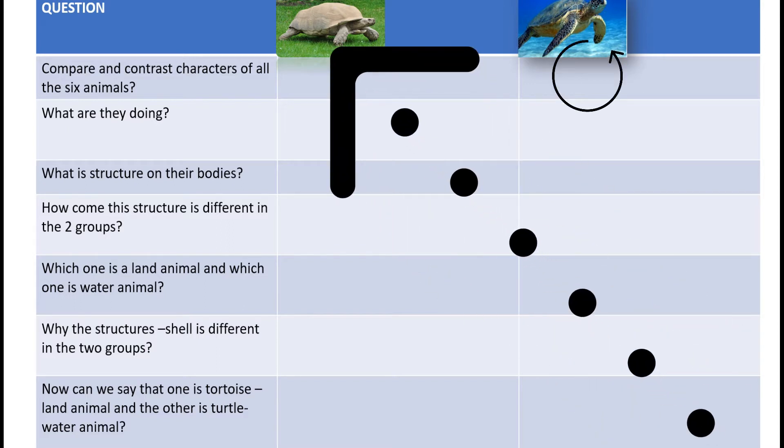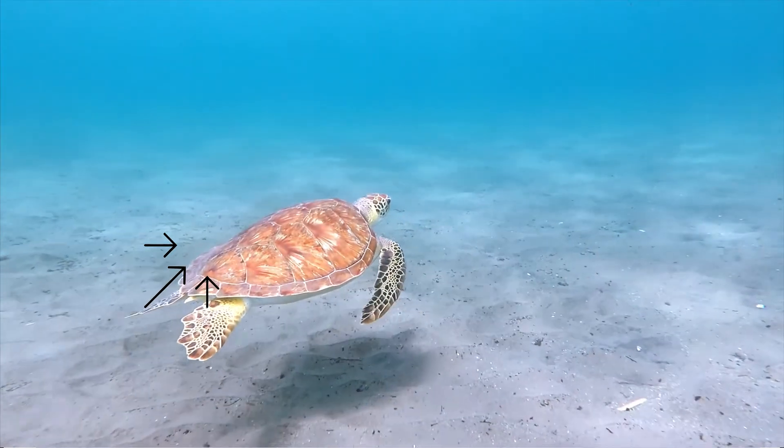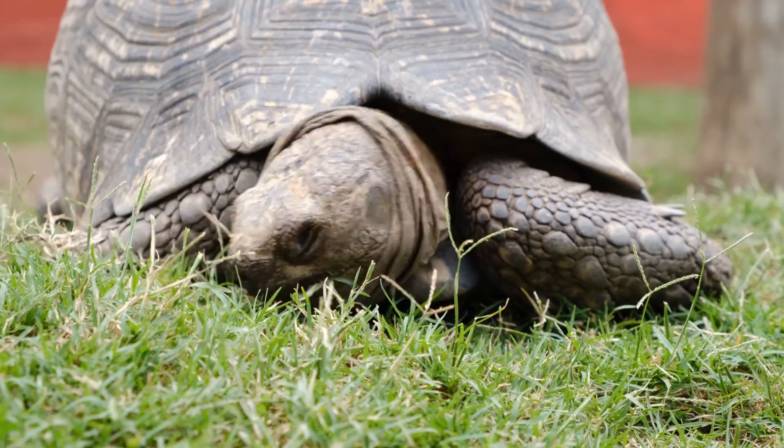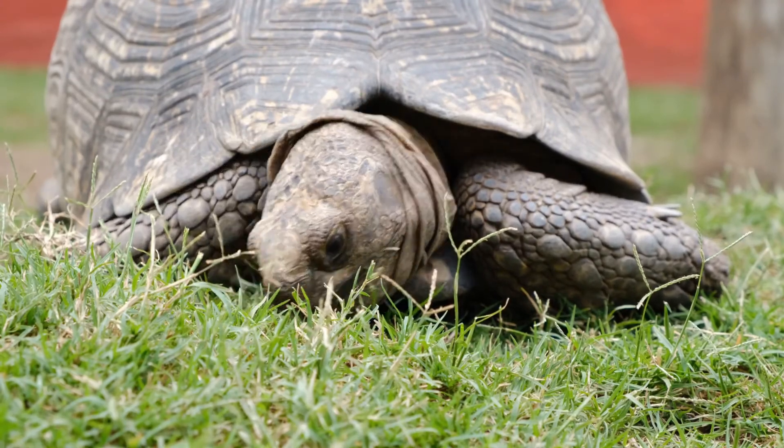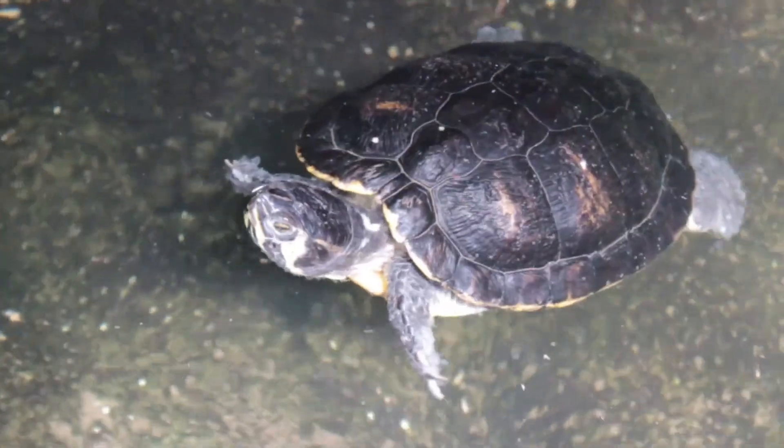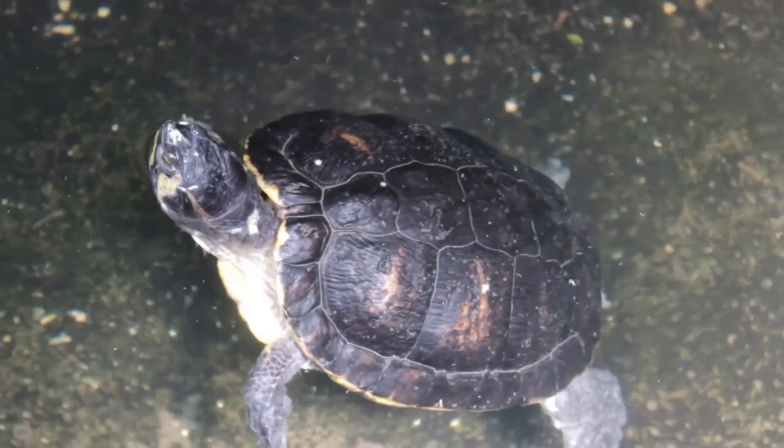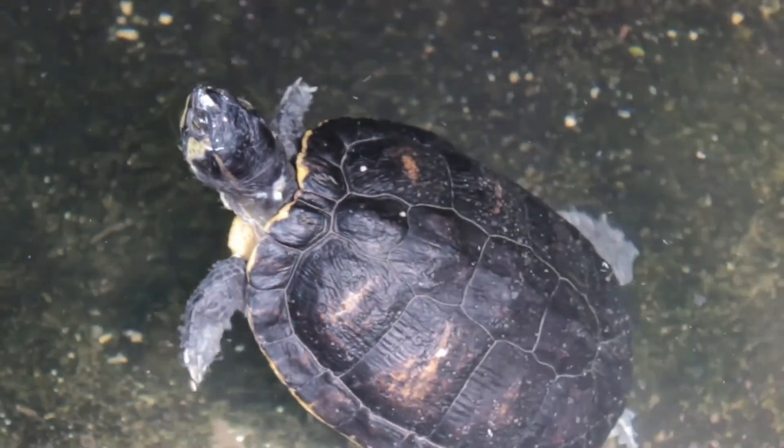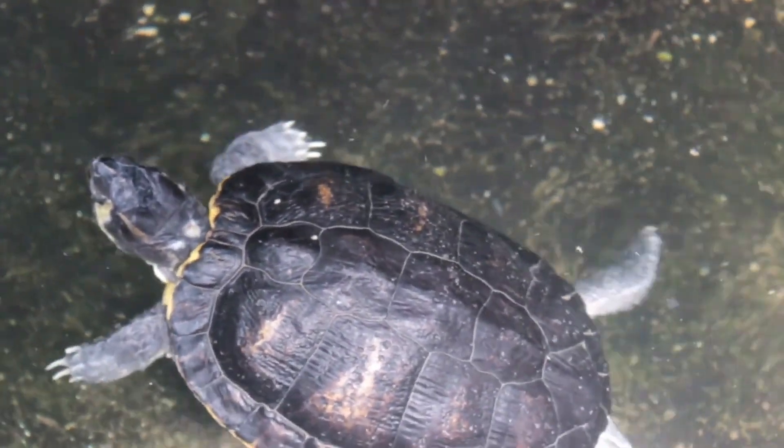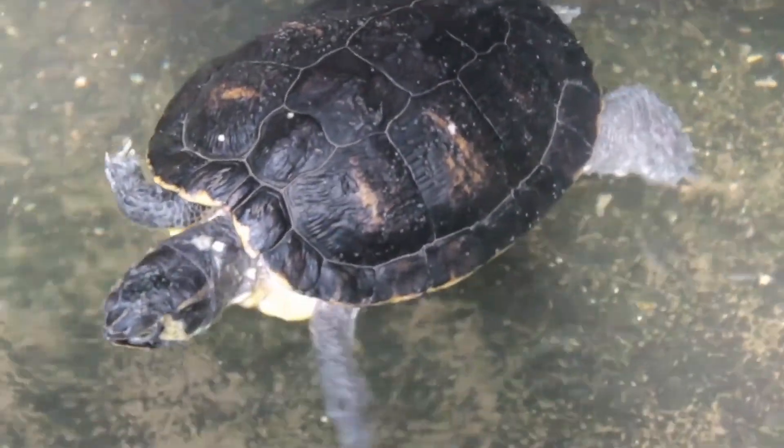There can be different questions like how come these structures are different in two groups? What is the reason? Which one is land and which one is water animal? Then the claws. This is all basically about their habitats, their body structures. We are generally concerned with the shape and size of the body, the different structures in the body, the habitat to which it belongs.